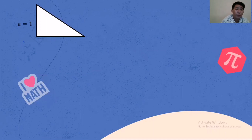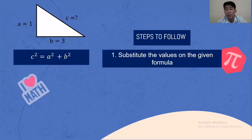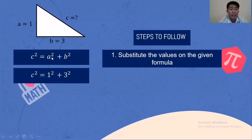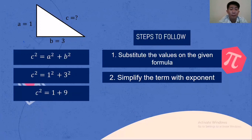Another example: A is equal to 1, B is equal to 3. What is the length of the hypotenuse? Using C squared equals A squared plus B squared. Step one: substitute the values — A equals 1 and B equals 3. Step two: simplify the terms with exponents. 1 raised to 2 is 1 times 1, that is 1. 3 raised to 2 is 3 multiplied by 3, that is 9.